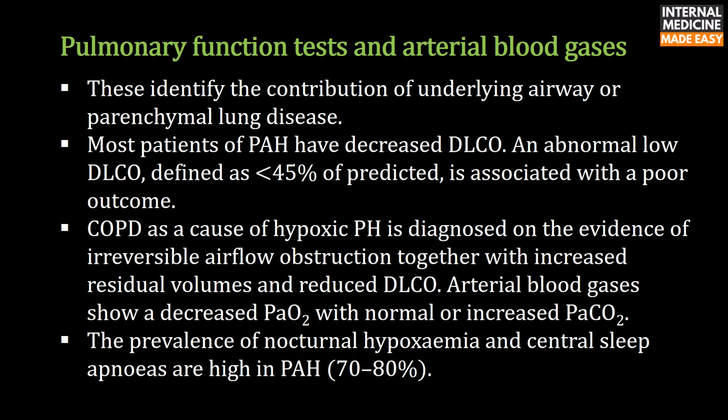Pulmonary function tests and arterial blood gases identify the contribution of underlying airway or parenchymal lung disease. Most patients with pulmonary arterial hypertension have decreased DLCO. An abnormally low DLCO, defined as less than 45% of predicted, is associated with a poor outcome. COPD as a cause of hypoxic PH is diagnosed on evidence of irreversible airflow obstruction, increased residual volumes, and reduced DLCO. Arterial blood gases show decreased PaO2 with normal or increased PaCO2.